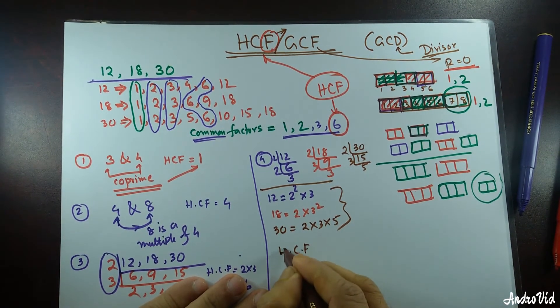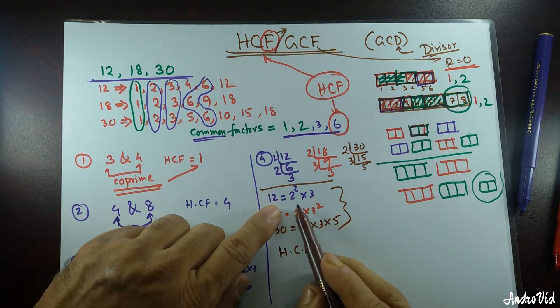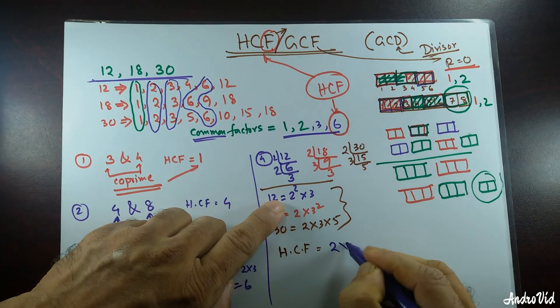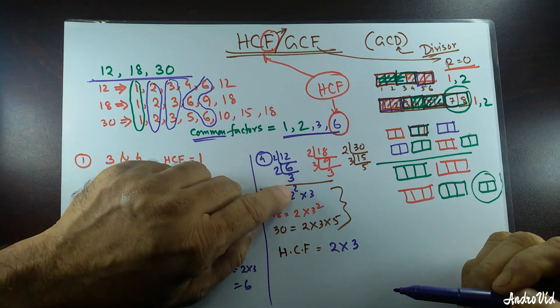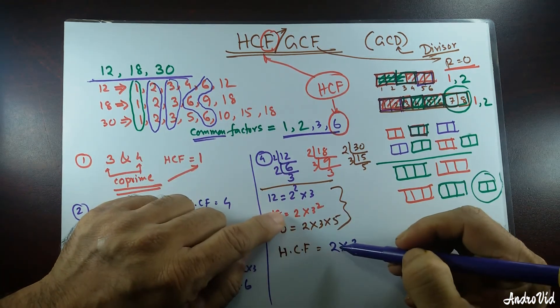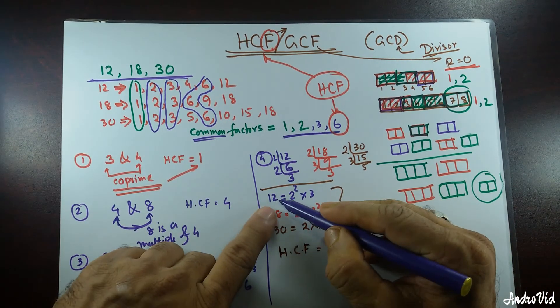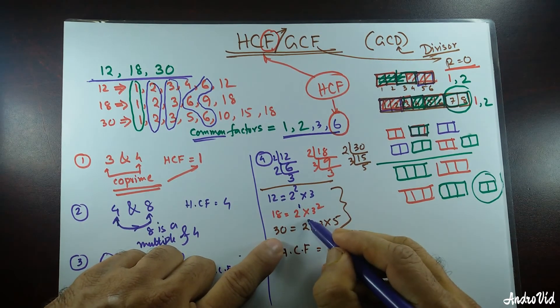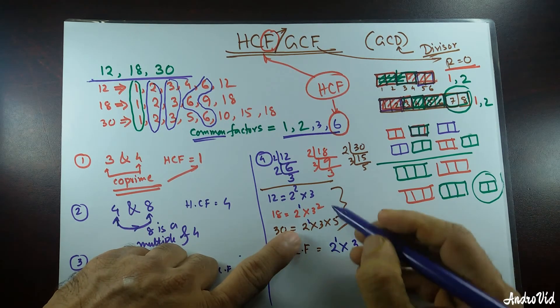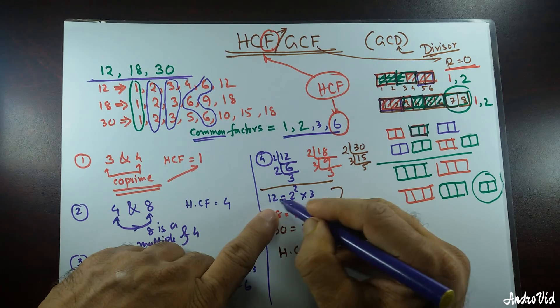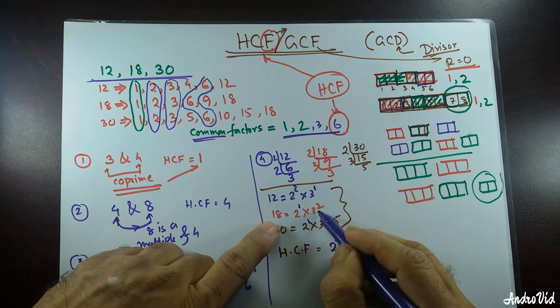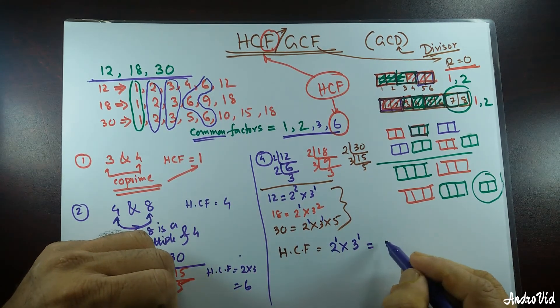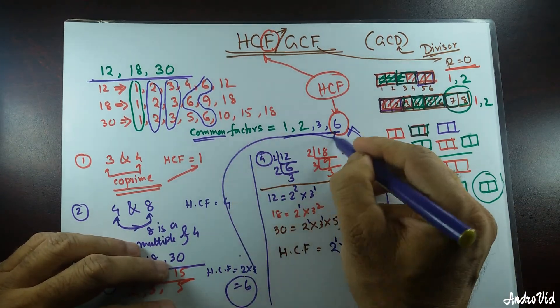HCF would be all the common base. 2 and 3 are common in all these three numbers. 5 is not common, so I'm not going to take 5. I'm going to take only 2 and 3. And the next step is take the lowest power of each of the common factor. 2 is a common factor. In 12, the power of 2 is 2. In 18, power of 2 is 1. And 30, power of 2 is 1. So, lowest power is 1. Same thing, 3 has lowest power of 1. So, if you multiply these two, it's going to be 6.